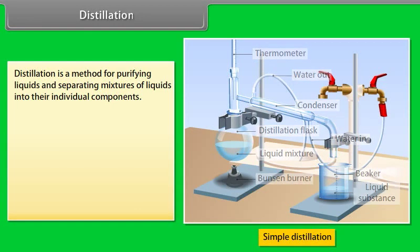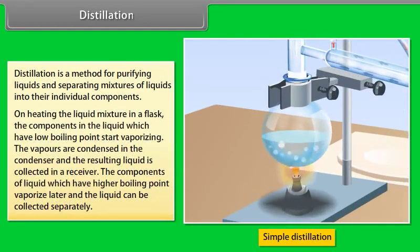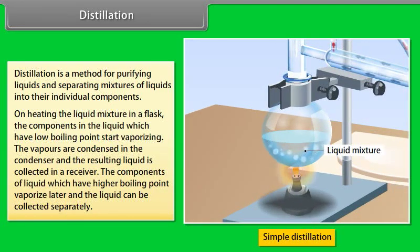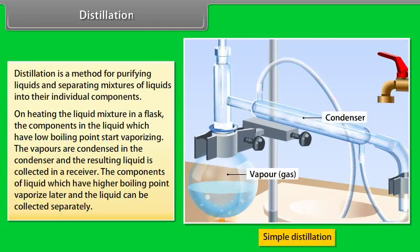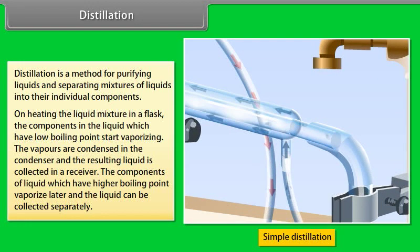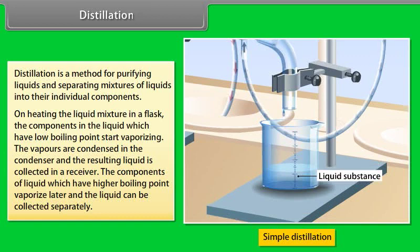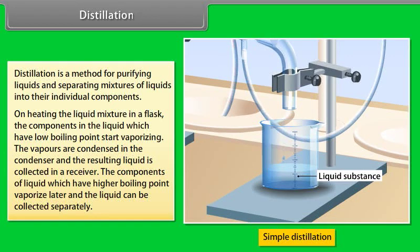Distillation is a method for purifying liquids and separating mixtures of liquids into their individual components. On heating, the liquid mixture in a flask causes components with low boiling points to start vaporizing. The vapours are condensed in the condenser and the resulting liquid is collected in a receiver. Components with higher boiling points vaporize later and can be collected separately.